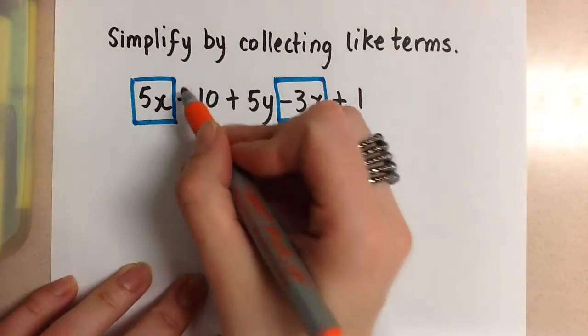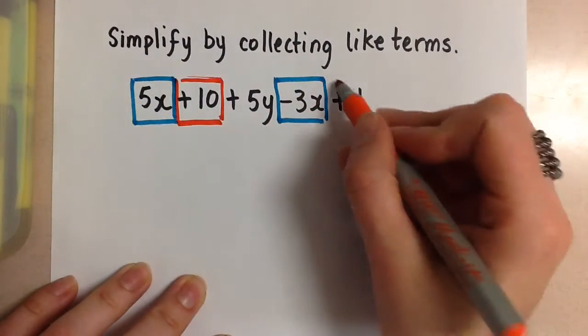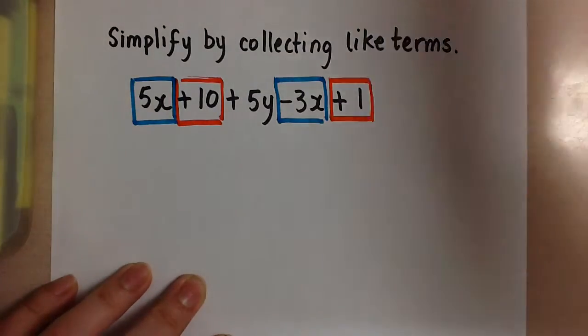Then we have a plus 10, that's a constant term, and we have a plus 1, that's another constant. So those are like terms and we're going to combine them together.